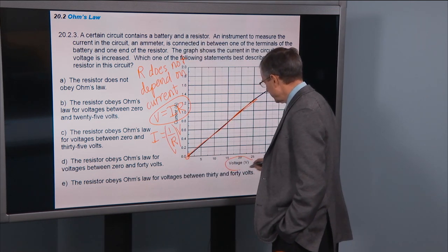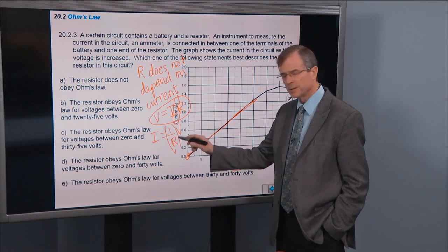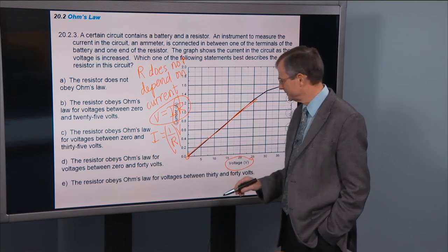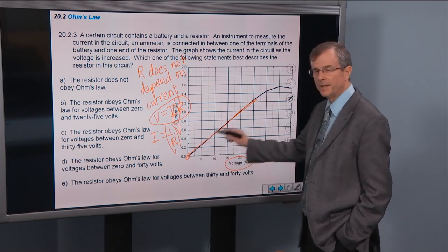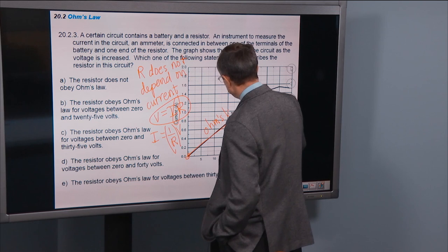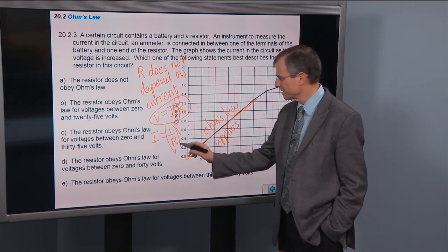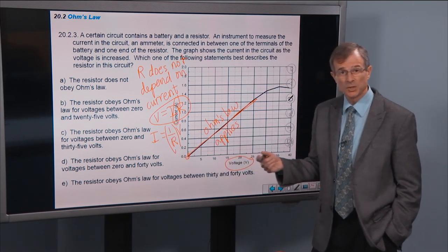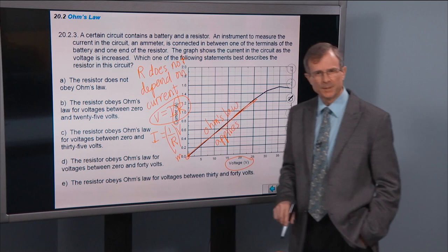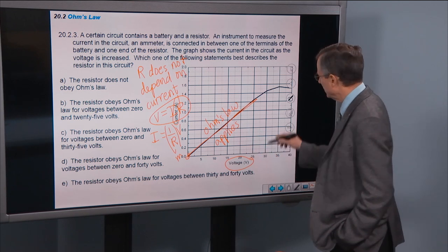So voltage here is along the x-axis, current is along the y-axis, and the coefficient of proportionality is 1 over R. If R does not depend on the current, then we'll get a nice straight line here. So Ohm's law applies here because this coefficient, this is like the slope, y equals mx plus b, this is the slope when you're plotting current as a function of voltage. So it applies here.